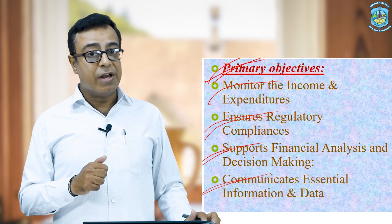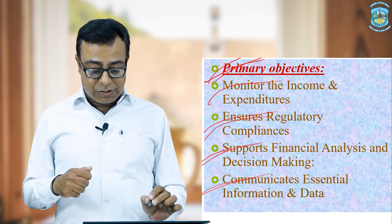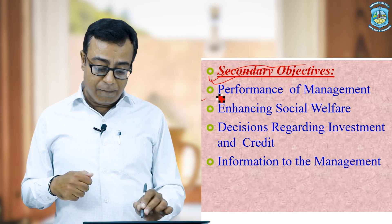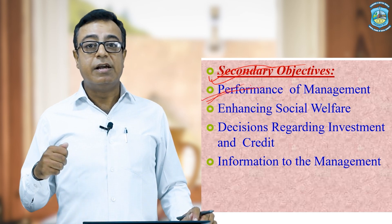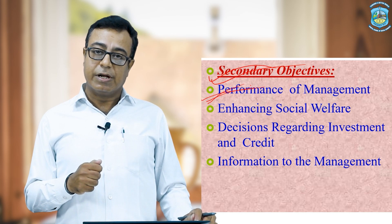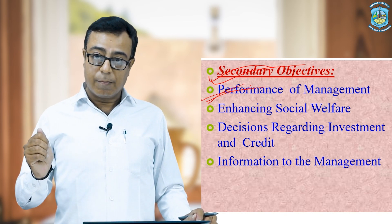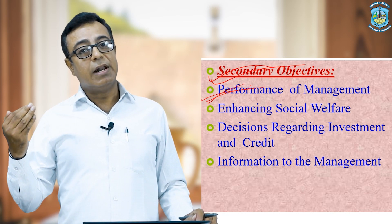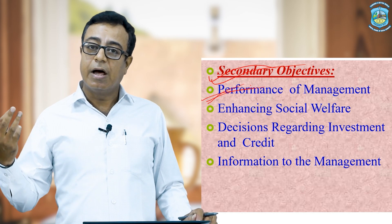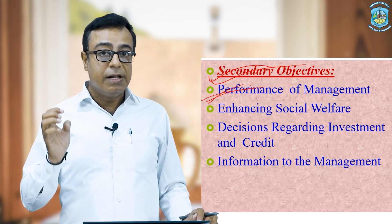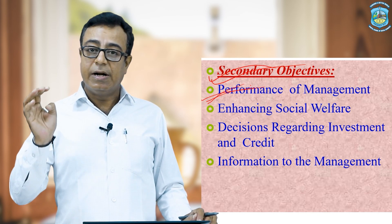Now we move to secondary objectives. The first is performance of the management — the data given in corporate financial reporting gives a clear picture of the management's performance during the last particular period, whether a year or a quarter. It presents a clear picture of management performance in the reporting.